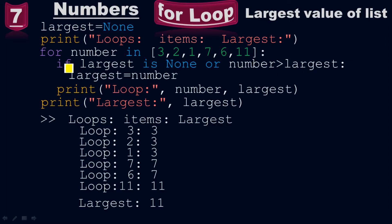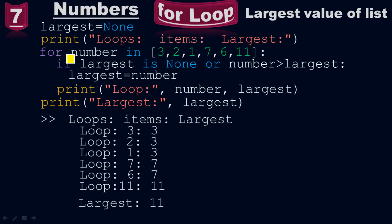What this expression says: if largest is none — initially pointing towards the initial stage — or the number is greater than largest, then largest equals to number. The for loop will iterate each and every single number step by step. If the respective number is greater than the largest one, then that will be the largest number. It is simple logic.